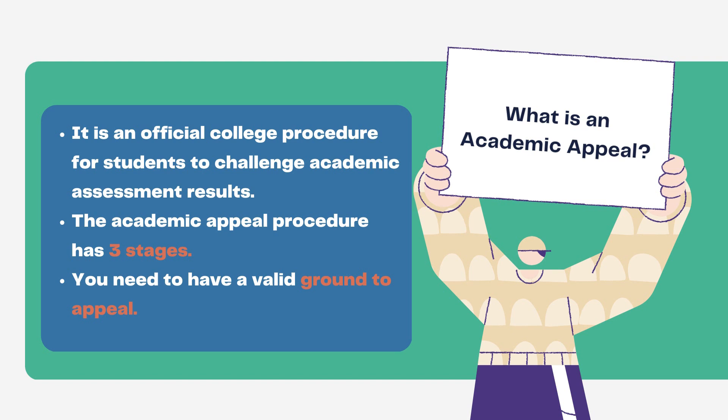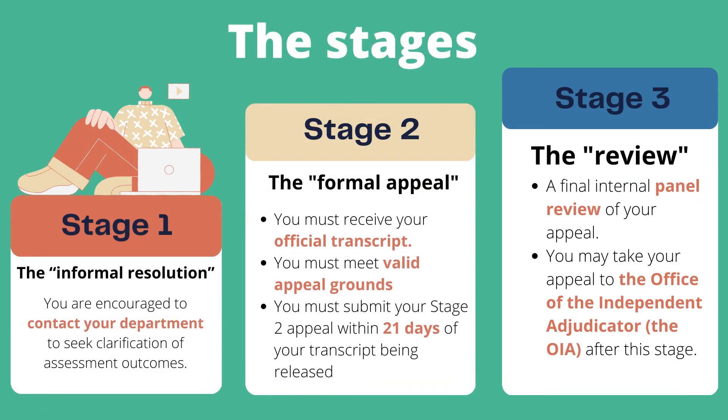The Academic Appeal procedure has three stages, and you will need to have a valid ground to appeal. In Stage 1, the informal resolution stage, you are encouraged to contact your department to seek clarification of assessment outcomes and discuss any concerns you have. The department can explain how the assessment outcomes came about and what may be achievable if you decide to submit a formal Stage 2 appeal.